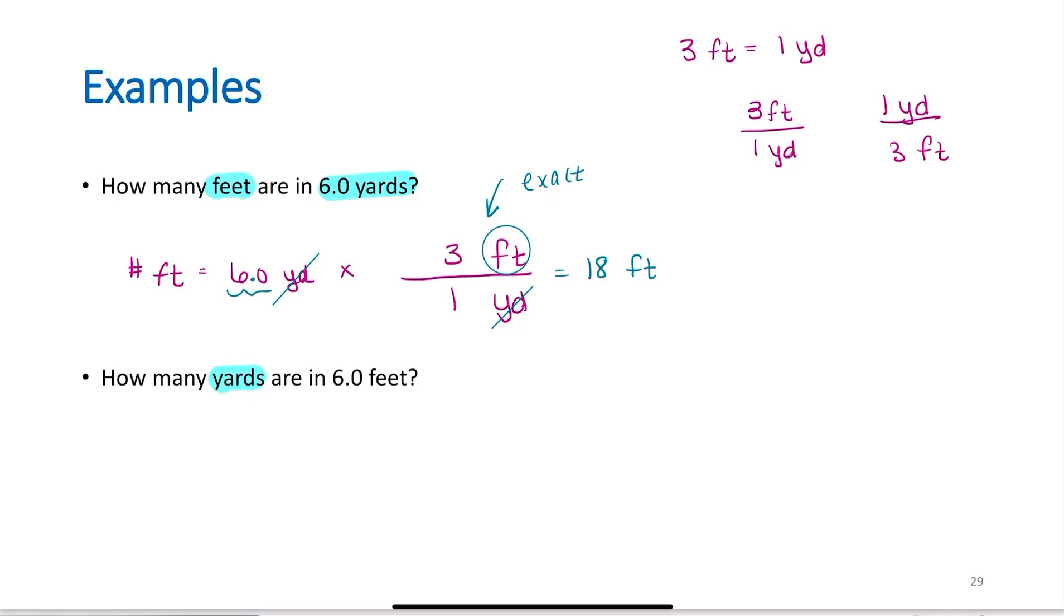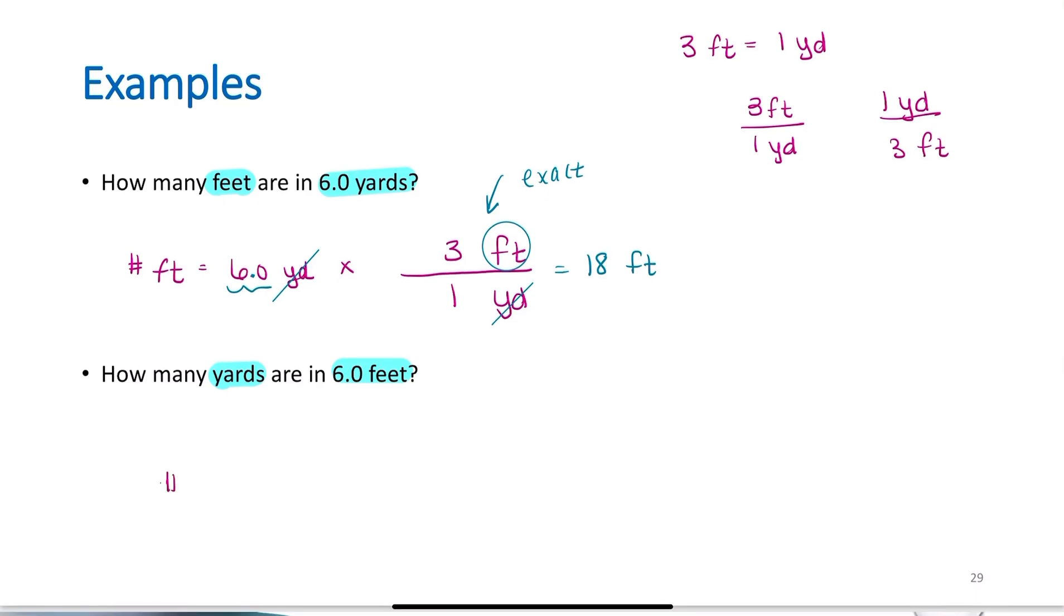Next question: how many yards are there in 6.0 feet? Now I'm trying to find yards. Number of yards. I have 6.0 feet. I'm trying to cancel feet and get to yard. I know that one yard is three feet. Cancels my feet, gives me yards. That is 6.0 there. 6.0 divided by three is two, but there's two sig figs here. This is exact, so I need to say 2.0 yards. Again, these are easier calculations, but in the very next module, here in class, we'll go ahead and start working some more difficult examples.